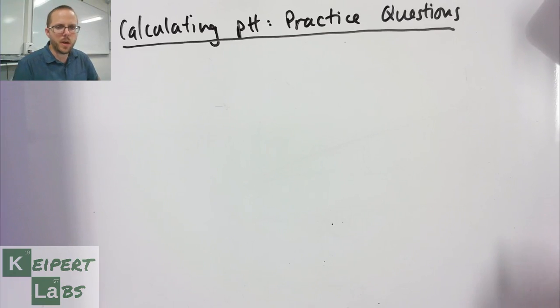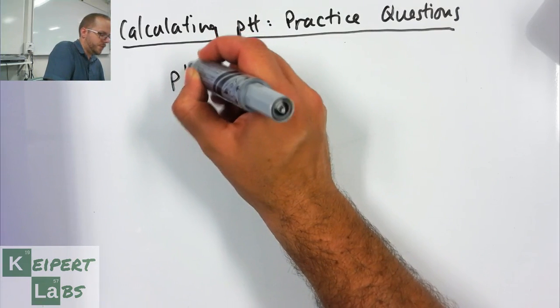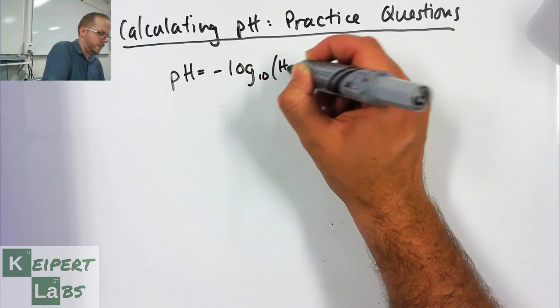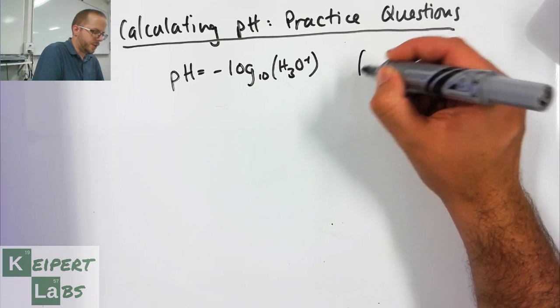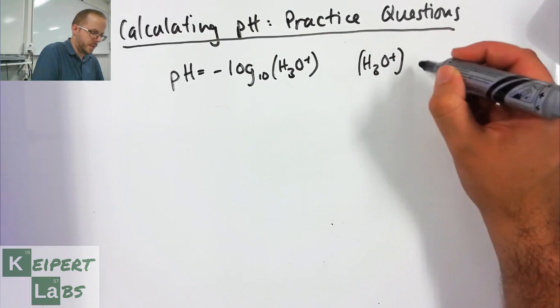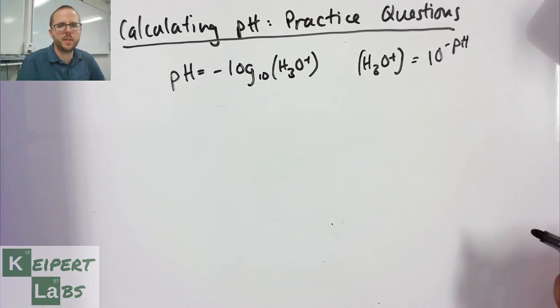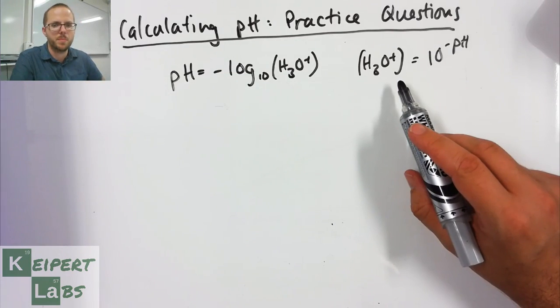At the top I'll just write the two formulas that we're going to keep a close eye on. We've got pH equals minus log base 10 of our hydronium ion concentration, and that our hydronium ion concentration equals 10 to the minus pH. Just remembering from the previous video that these relationships also work for pOH and OH-.